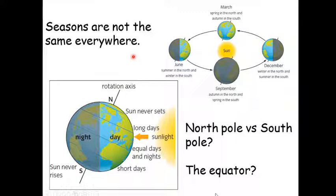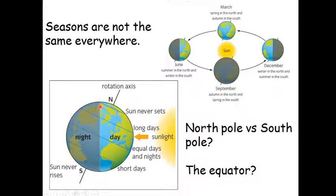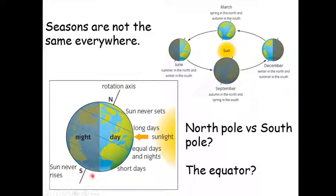Let's think in more detail about why seasons aren't the same everywhere. We said that when the Northern Hemisphere is experiencing summer, the Southern Hemisphere has winter. At the extreme of the North Pole — in our summer in June — the North Pole is tilted towards the sun. Places close to the North Pole don't actually go into darkness as the Earth rotates; they can experience 24 hours of sunlight. The opposite is true near the South Pole: in June, places very close to the South Pole don't go into daylight, experiencing 24 hours of nighttime — the sun never rises in their extreme winter.